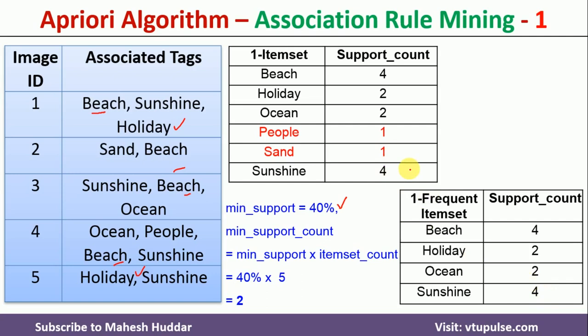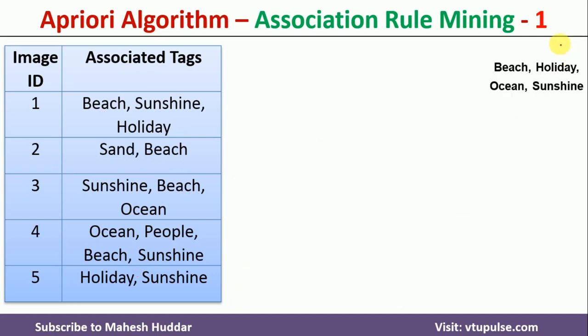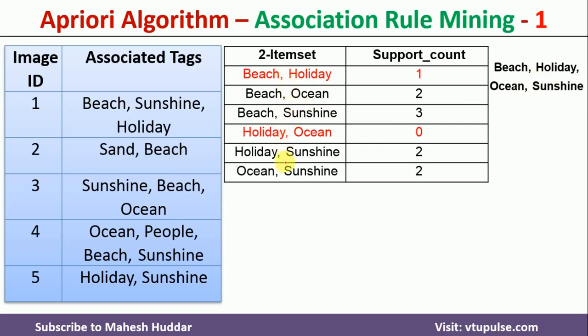The same process applies to calculate the 2-frequent itemsets. First, we need to find the 2-itemsets using the distinct 1-frequent itemsets: beach, holiday, ocean, and sunshine. Taking two at a time gives us: beach-holiday, beach-ocean, beach-sunshine, holiday-ocean, holiday-sunshine, and ocean-sunshine. These are all the different combinations, and I have written all of them.